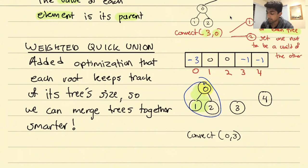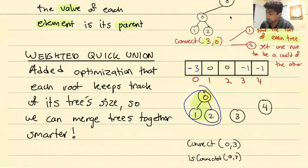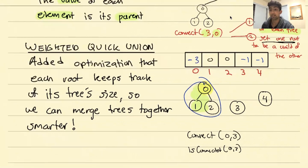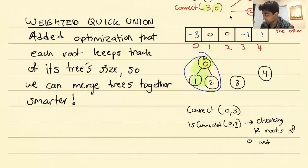That covers Weighted Quick Union. For connect, we do the same as Quick Union but now we check which root has the smaller size and set that root as a child of the larger root. For isConnected, all we do is find the roots of both elements and check if they're the same — for example, checking if the roots of 0 and 3 are equal.